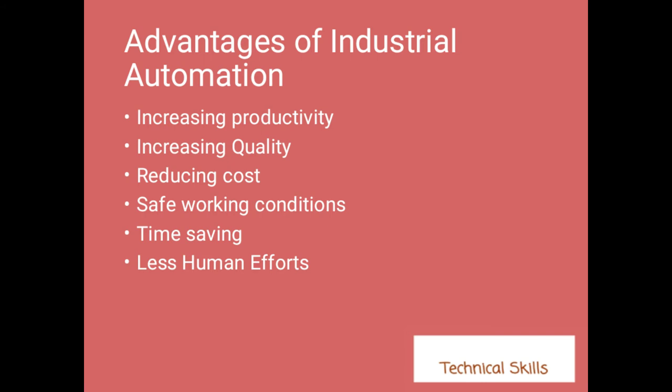We will not have any human errors, so we can achieve best quality with the help of industrial automation. The third advantage is reducing cost. Cost can be reduced with the help of machines because labor cost will be reduced — we do not have to pay regularly to laborers. A machine can do the work of many laborers at a time, and when production is high, cost per unit is also reduced.